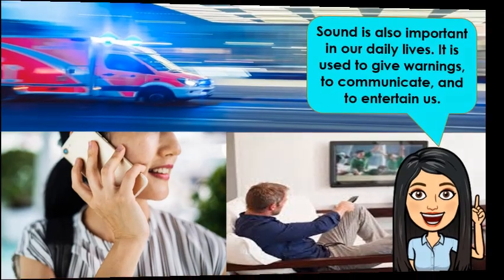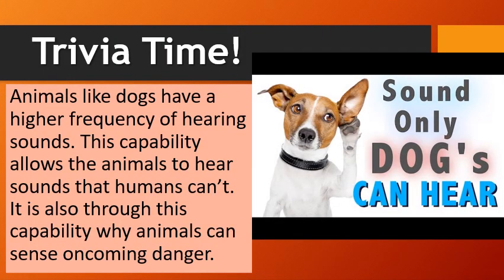Trivia time! Animals like dogs have a higher frequency of hearing sounds. This capability allows animals to hear sounds that humans can't. It is also through this capability why animals can sense oncoming danger. Dogs may predict earthquakes using their highly sensitive ears, and their ability to predict somebody's arrival at your door is likely due to their ability to detect the sound of a car before you can hear it, rather than any sixth sense. Dogs can also be distressed by everyday noises like a vacuum cleaner or power drill, because they sound louder to dogs than to humans.